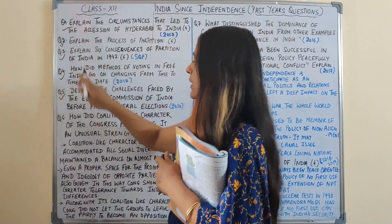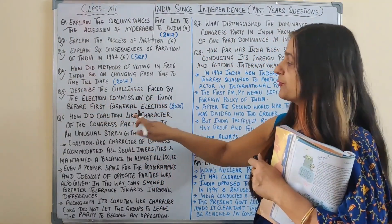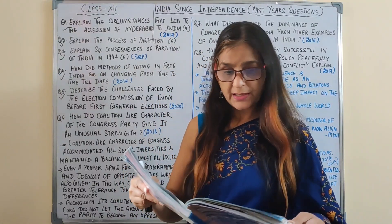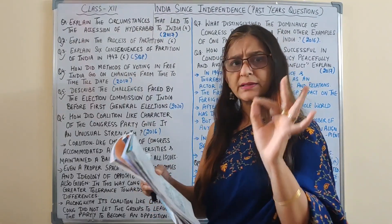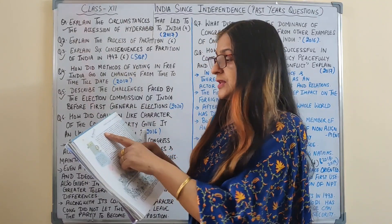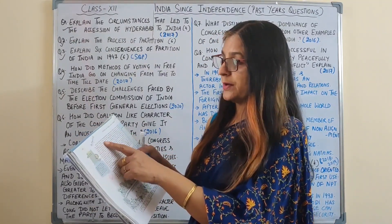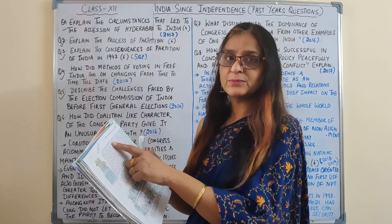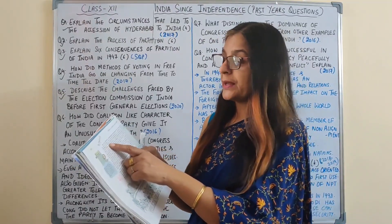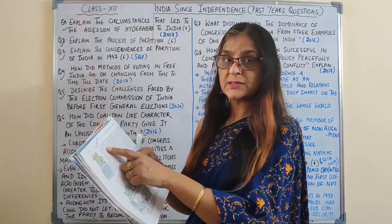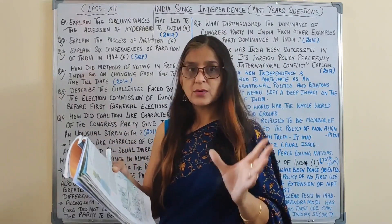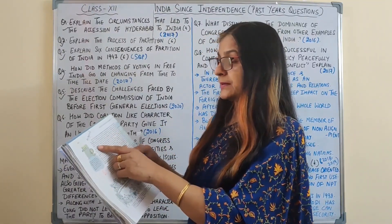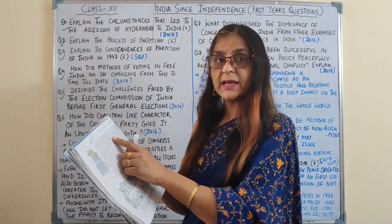Question number 5: Describe the challenges faced by the Election Commission of India before the first general elections — a 2020 question. The Election Commission discovered that it was not going to be easy to hold a free and fair election in a country of India's size. Holding an election required delimitation — drawing the boundaries of the electoral constituencies — and also preparing the electoral rolls or the list of all citizens eligible to vote.